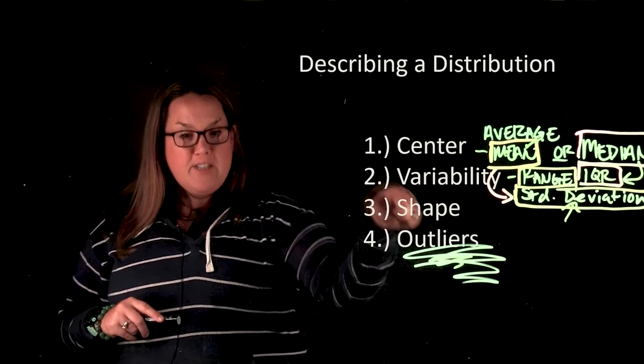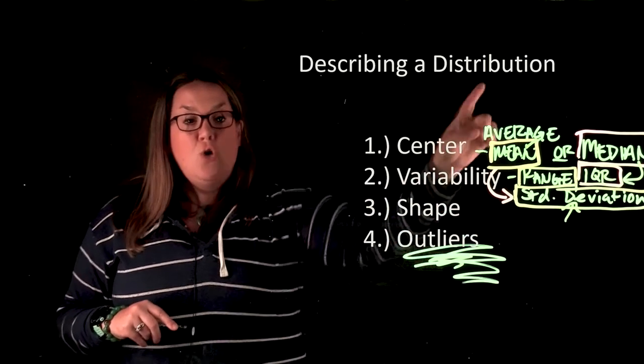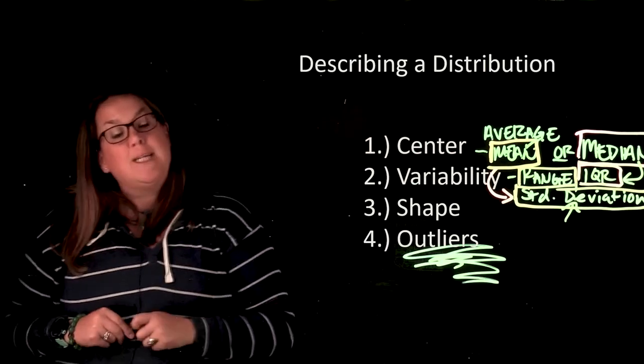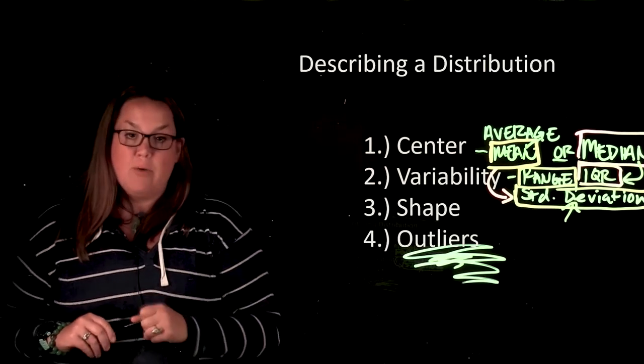So if you have outliers that are impacting the shape and making it skewed, you would not want to choose the mean and standard deviation, because they're significantly impacted by those outliers.